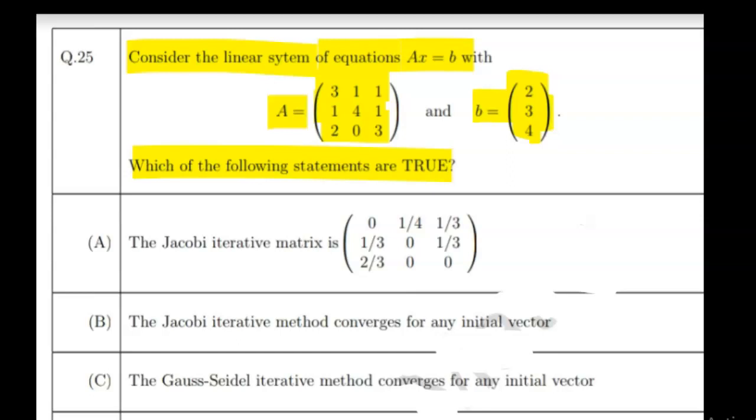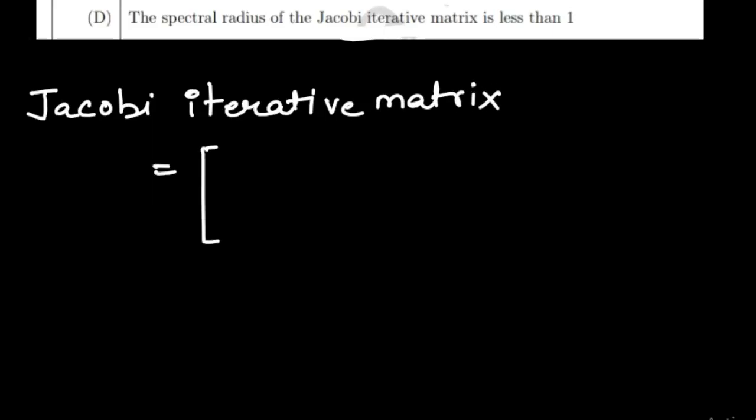First of all, we need to write the Jacobi iterative matrix. To write the Jacobi iterative matrix, we take the first row elements. The diagonal element is 3, so we divide by 3, giving us 0, 1/3, and 1/3 in the first row.